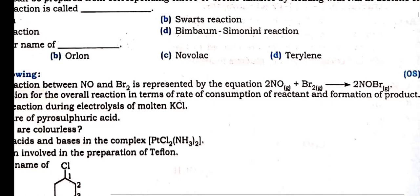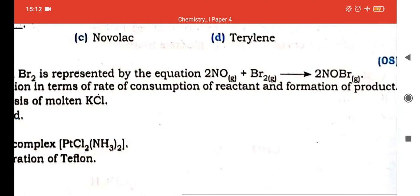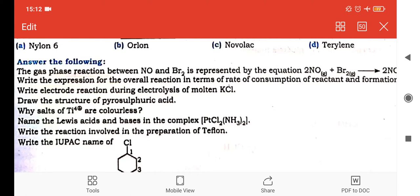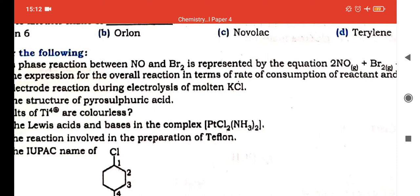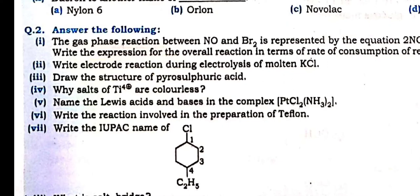In the product also you can write 1/2. The reactant is indicated by the minus sign, and for the product it is represented by the plus sign. Write the electrode reaction during electrolysis of molten KCl — from electrochemistry. Structure of pyrosulfuric acid from P-block elements, group 16, 17, 18. Why are salts of Ti⁴⁺ colorless? Because no unpaired electron — all electrons have been lost. 4+ means 4 electrons lost — from the d and f block elements.